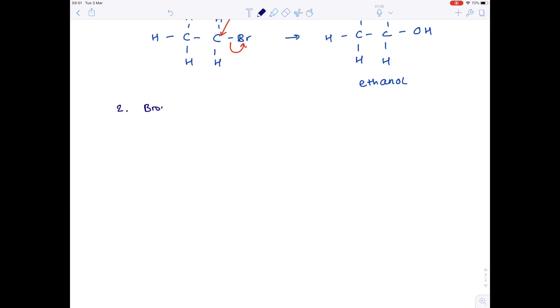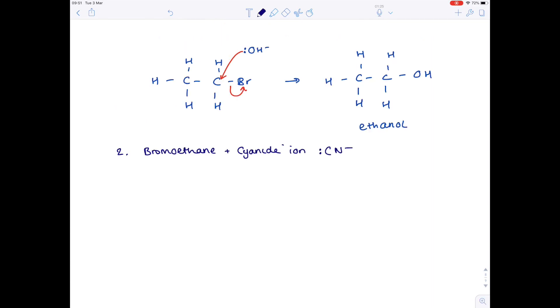Second example now, bromoethane and the cyanide ion, CN-. Very similar situation. Here's our bromoethane. Here's our cyanide ion. The lone pair on the cyanide, which remember is acting as the nucleophile, attacks at that slightly positive carbon, forcing the electrons from that bond to bromine.